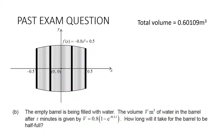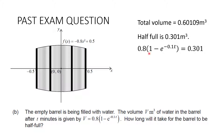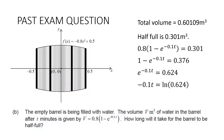The empty barrel is being filled with water. Volume V meters cubed after t minutes is given by V equals 0.8(1 minus e to the negative 0.1t). How long to fill the barrel halfway? Half full is 0.301 meters cubed. Solving: divide both sides by 0.8, rearrange to isolate the exponential, take logs of both sides: negative 0.1t equals ln 0.624. Dividing by negative 0.1 gives t approximately equal to 4.71 minutes.